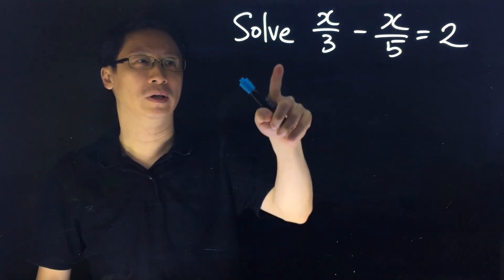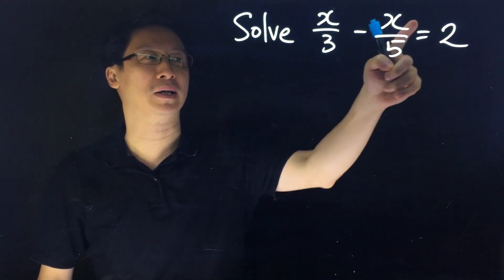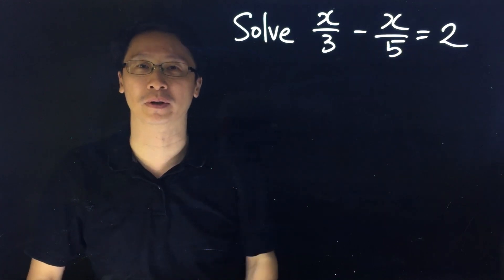Okay, solve this equation: x/3 - x/5 = 2.